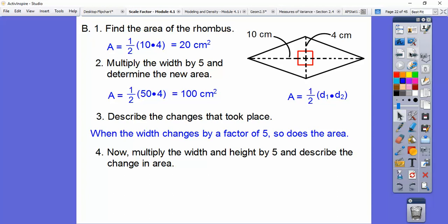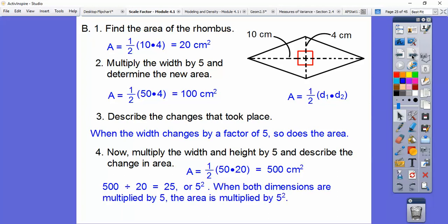Now let's multiply the width and the height by 5 and describe the change. So 10 times 5 is 50. 4 times 5 is 20. Let's plug that in, and we get 500. What relationship does 20 have with 500? Let's divide. 500 divided by 20 is 25, or 5 squared. When we multiply all the dimensions by a certain number, that number becomes our scale factor, and our area changes by that number squared. But it has to be all the dimensions. If you just do one of them, it's just going to multiply it by whatever that factor is. When both dimensions are multiplied by 5, the area is multiplied by 5 squared.